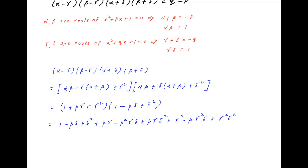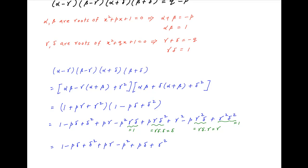Now, gamma times delta is equal to 1. Therefore, gamma·delta² equals gamma·delta times delta, which equals delta. Gamma²·delta equals gamma·delta times gamma, which equals gamma. And gamma²·delta² equals 1. Therefore, this expression simplifies to 1 minus p·delta + delta² + p·gamma minus p² + p·delta + gamma² minus p·gamma + 1.